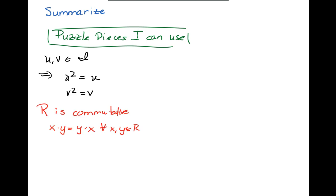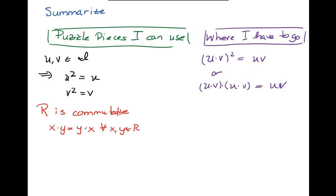I'm also allowed to use that R is commutative, that xy is yx. Where do I have to go?